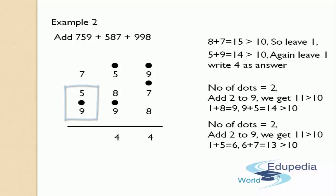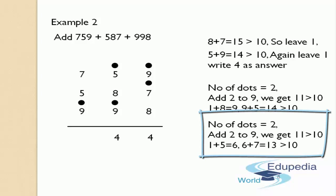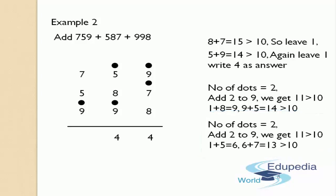So it is just a single digit number, so there is no problem for us. Add this number to the next number — 6 plus 7, you will get 13. Now again, you got a 2-digit number. So as per our rules, you have to leave 1. Instead of leaving 1, you have to place a dot on the top of the number 7, like this. The leftover number is 3 — write that in the answers place. Now count the number of dots in the third column, that is the hundreds place. You can see only 2 dots. Write those dots in the answers place, beside 3, like this.